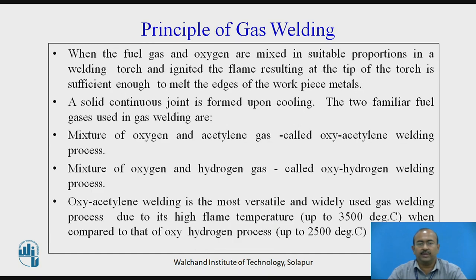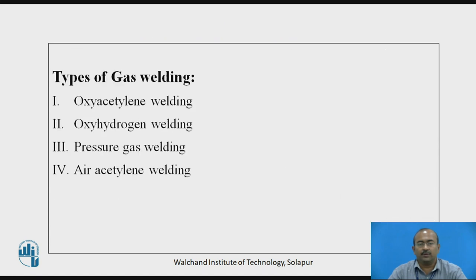When fuel gas and oxygen are mixed in a suitable proportion in a welding torch and ignited, the flame at the tip of the torch is sufficient to melt the edges of the workpiece metals, forming a solid continuous joint upon cooling. The two familiar fuel gas mixtures used are oxygen and acetylene — called oxyacetylene welding — and oxygen and hydrogen — called oxyhydrogen welding. Oxyacetylene welding is the most versatile and widely used, with a flame temperature up to 3500°C, compared to oxyhydrogen at up to 2500°C. Types of gas welding include oxyacetylene, oxyhydrogen, pressure gas welding, and air-acetylene welding.